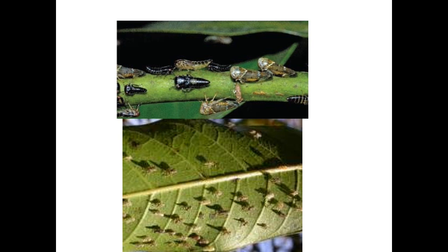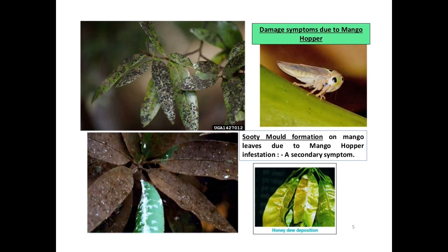Once the tree starts flowering, especially February to April or November to February, the hopper population shifts to the inflorescence and causes heavy damage. There are two types of damage: direct — sucking cell sap — and indirect — through oviposition punctures and honeydew secretion. This secretion leads to fungal growth, sooty mold formation, and reduction in photosynthesis.